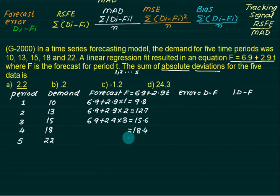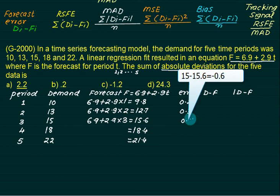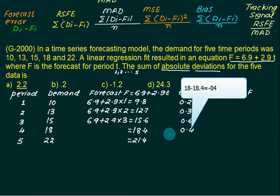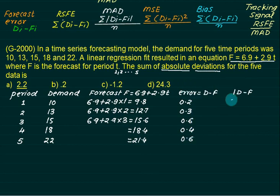To calculate error: 10 minus 9.8 is 0.2, 13 minus 12.7 is 0.3, 15 minus 15.6 is minus 0.6, 18 minus 18.5 is minus 0.4, 22 minus 21.4 is 0.6. For absolute values we have 0.2, 0.3, 0.6, 0.4, and 0.6. The numerical asks to calculate the sum: 0.2 plus 0.3 is 0.5, plus the rest equals 2.1.